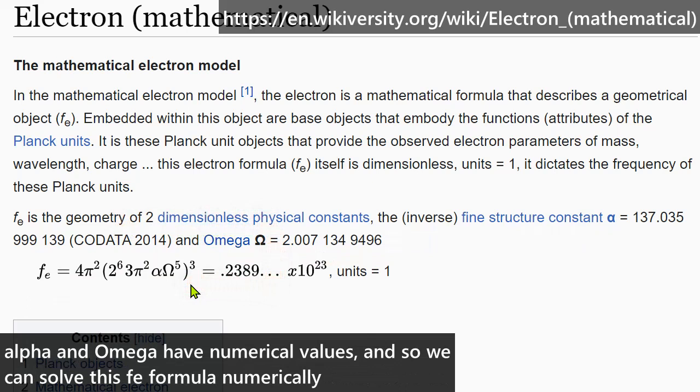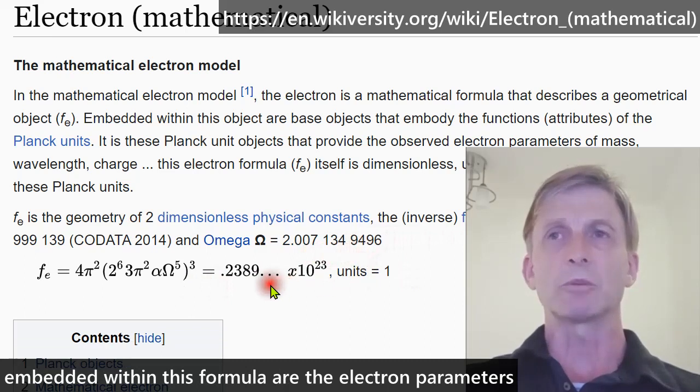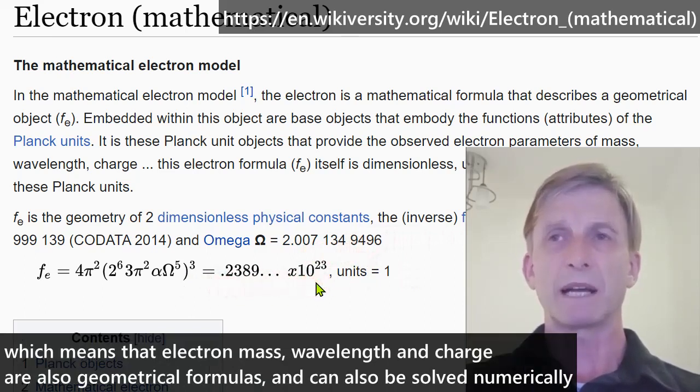Alpha and omega have numerical values and so we can solve this Fe formula numerically. Embedded within this formula are the electron parameters, which means that electron mass, wavelength and charge are also geometrical formulas and could also be solved numerically.